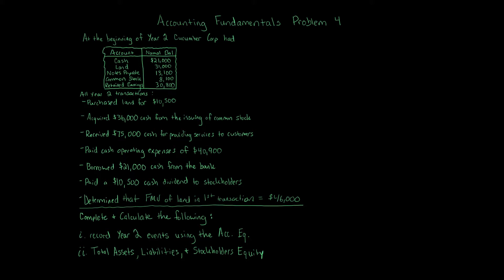Complete and calculate the following: Record Year 2 events using the accounting equation; determine total assets, total liabilities, and total stockholders' equity. There's a lot in this problem — make sure you go through the accounting fundamentals problems before this one to get an idea of what's going on, because we're going to go a little fast. We're asked two things: record Year 2 events using the accounting equation, which I call the horizontal approach. Let's give ourselves some room and put that up here.